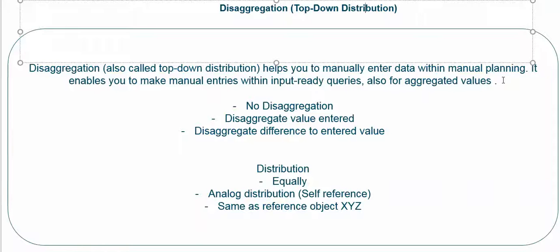Suppose you have a total amount of 100 and you have five materials — each having maybe 30, 10, 20, and so on. Now you want to change this total amount to 200, and that 200 will be distributed among its materials. This is called top-down distribution: you have a total amount at the top, you change it, and its component values change accordingly. Remember it is used for aggregated data like a total amount.